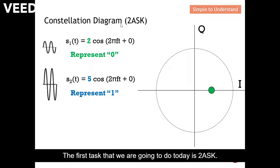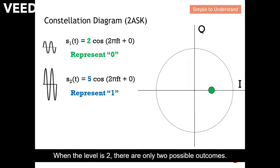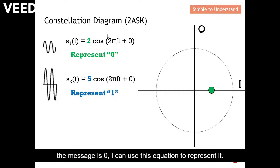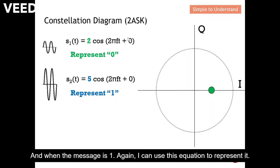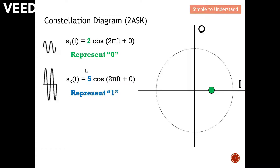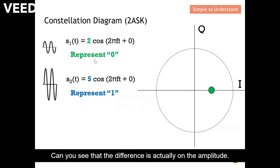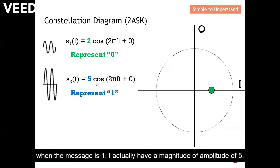The first task is 2-ASK, 2-level amplitude shift keying. When the level is 2, there are only 2 possible outcomes — either the message is 0 or the message is 1. When the message is 0, I can use this equation to represent it. When the message is 1, I can use this equation to represent it. The difference is actually on the amplitude: when the message is 0, I have an amplitude of 2, and when the message is 1, I have an amplitude of 5.